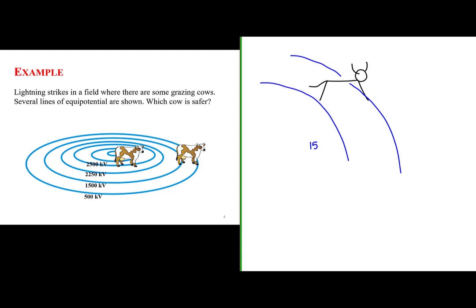One of these lines is the 1500 kilovolt line, and the other line is the 500 kilovolt line. The cow's heart is right in the middle. Between the equipotential lines we know there is a potential difference. That accelerating charge will first cross the 1500 kilovolt line before crossing the 500 kilovolt line. So the difference in electric potential between the feet of this cow is 1000 kilovolts.